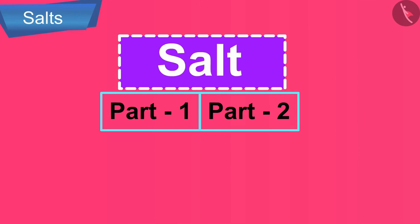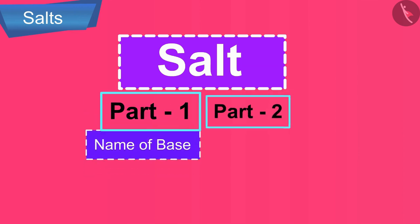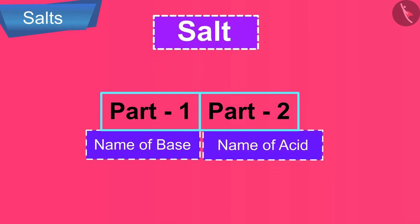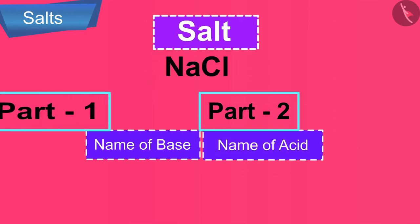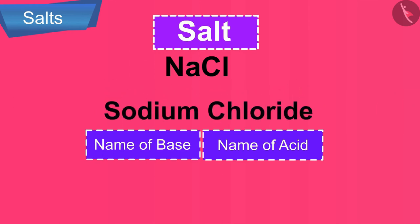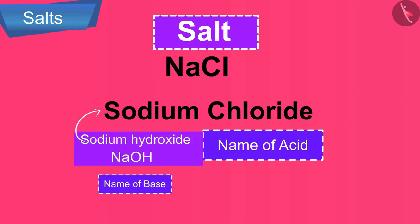The first part of the name of salt is derived from the name of the base, and the second part comes from the name of the acid. For example, sodium chloride: sodium comes from sodium hydroxide, which is a base, and chloride comes from hydrochloric acid.